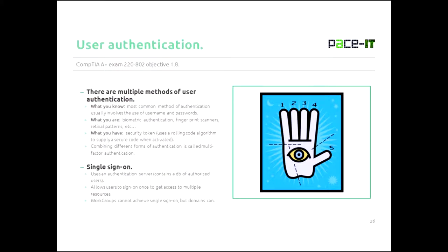There are a bunch of ways you can authenticate, and you can basically break them down into three things: what you know, what you are, and what you have. What you know is the most common user authentication — that's username and password. What you are is becoming more and more common, and that's biometric authentication: fingerprint scanners, retinal scans, facial recognition, voice recognition, and so forth.